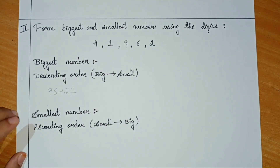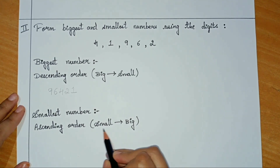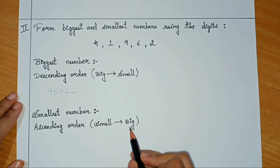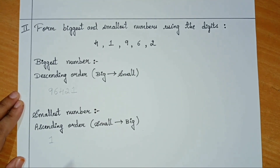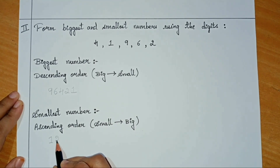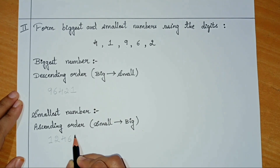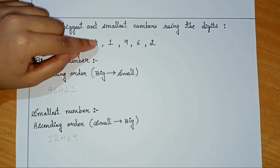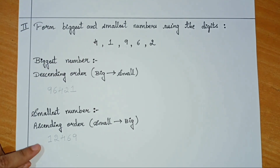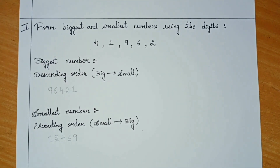Next, we will write the smallest number. To write the smallest number, we use the rule of descending order. In descending order, we write the numbers from small to big. The smallest number here is 1, so let me write 1 first. The next smallest number is 2, then 4, then 6, and then finally 9. So this is the biggest number formed using these digits and this is the smallest number formed using these digits.